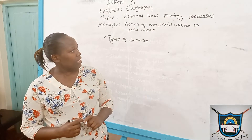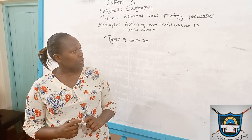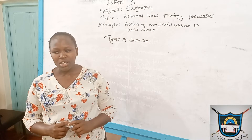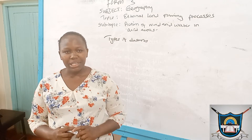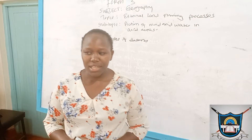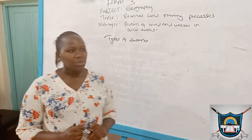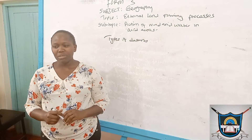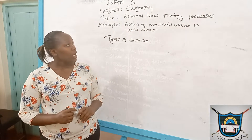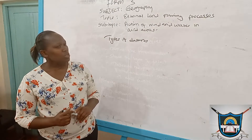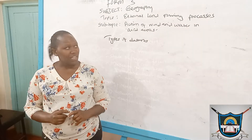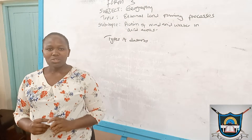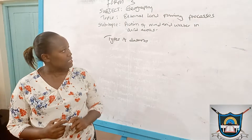Remember, we started with the types of external landform processes. We covered the sub-topics under weathering and mass wasting. We looked at the features formed as a result of mass wasting and weathering, and we also looked at the action of rivers and the features formed as a result of river action.